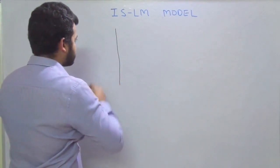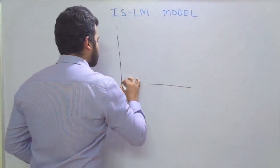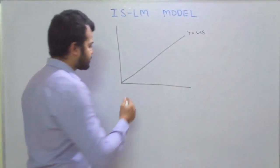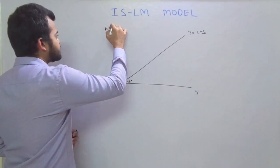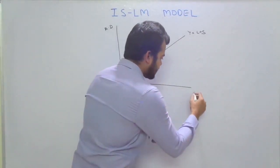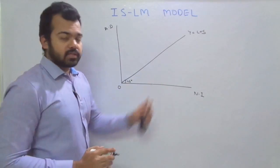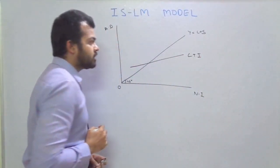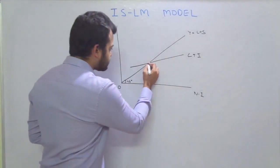Now we'll derive the IS curve from the aggregate demand side of Keynesian economics. We draw a 45-degree income line where Y equals C plus S. On the y-axis is aggregate demand and on the x-axis is national income. The aggregate demand curve is C plus I — consumption demand plus investment demand — giving us equilibrium at E0 with income Y0.